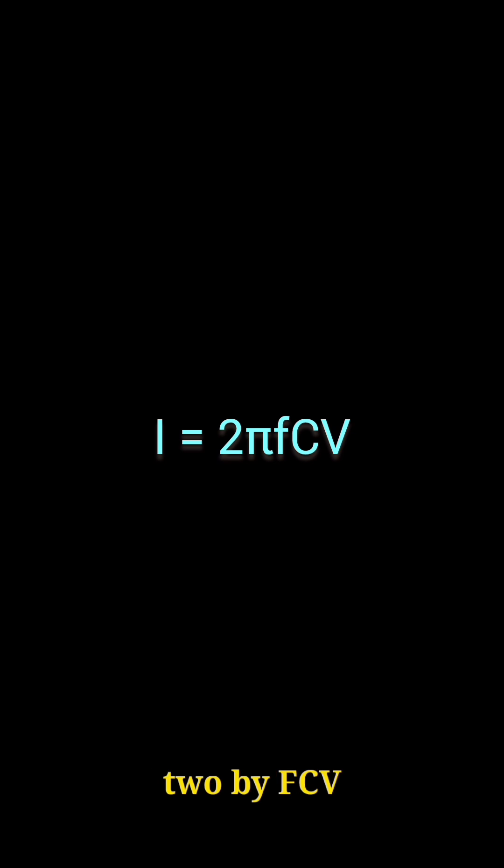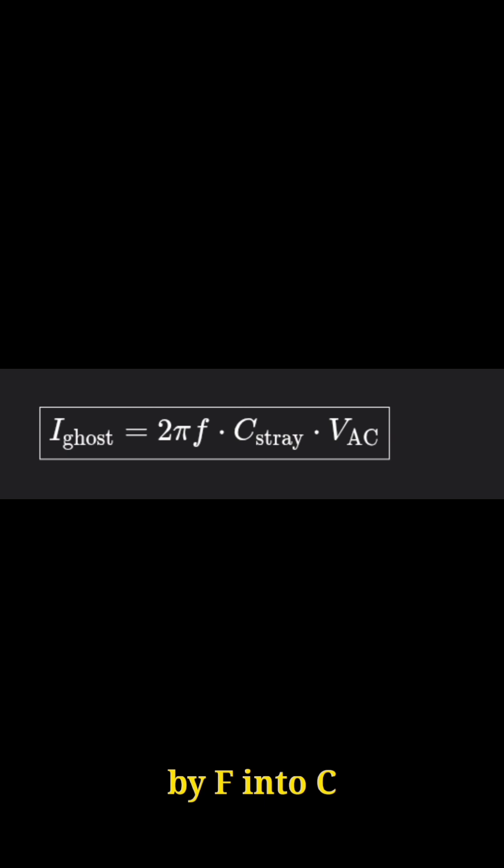Capacitive coupling current formula: I equals 2πFCV, where F is frequency, C is capacitance, and V is voltage. V ghost equals 2πF times C stray times VAC. This is the ghost current, that creepy little current you can't see but can feel.